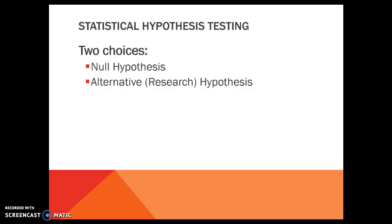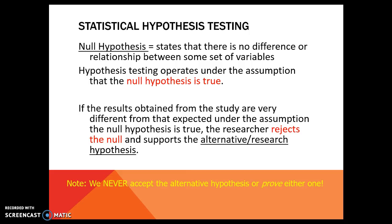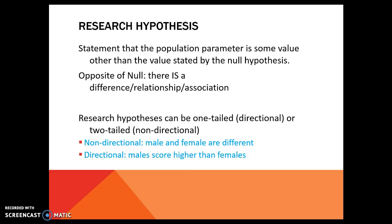There are two different hypotheses: null and the alternative, also called the research hypothesis. The null hypothesis states that everything is the same — no difference between the two groups, no relationship, no associations. All testing operates under the assumption that the null is true. If we get a result that is very different from what is expected, we reject the null in support of the alternative. But we're never actually accepting the alternative or proving either one — 'prove' is not a word we use. So we either reject the null or fail to reject the null. The research hypothesis is the opposite: it says there is a difference, relationship, or association.